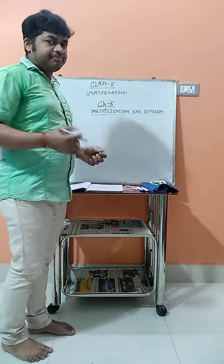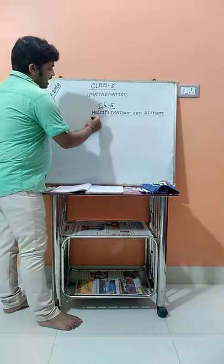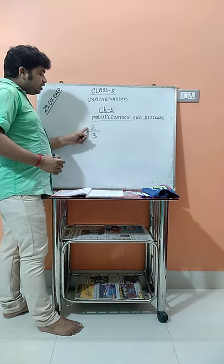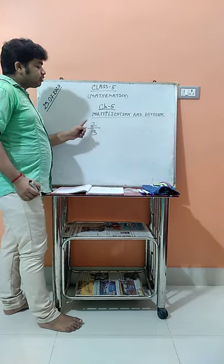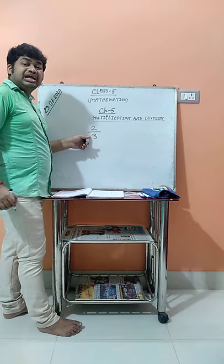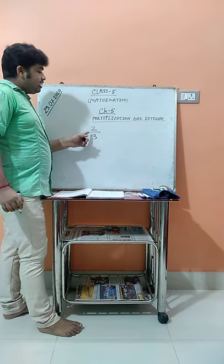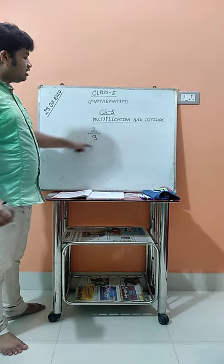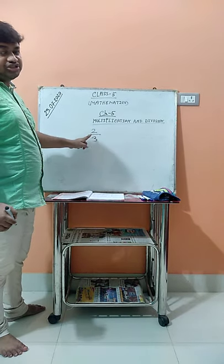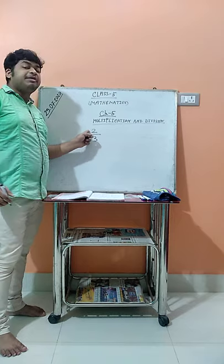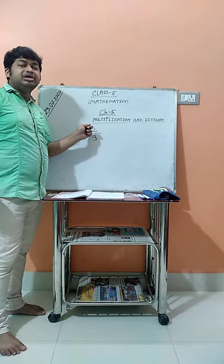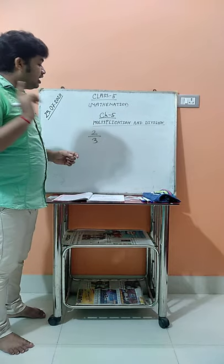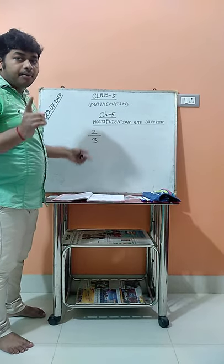I'd like to give one example of the proper fraction, like 2/3. Here, 2 is called the numerator and 3 is called the denominator. When the numerator is smaller than the denominator, this type of fraction is known as the proper fraction.